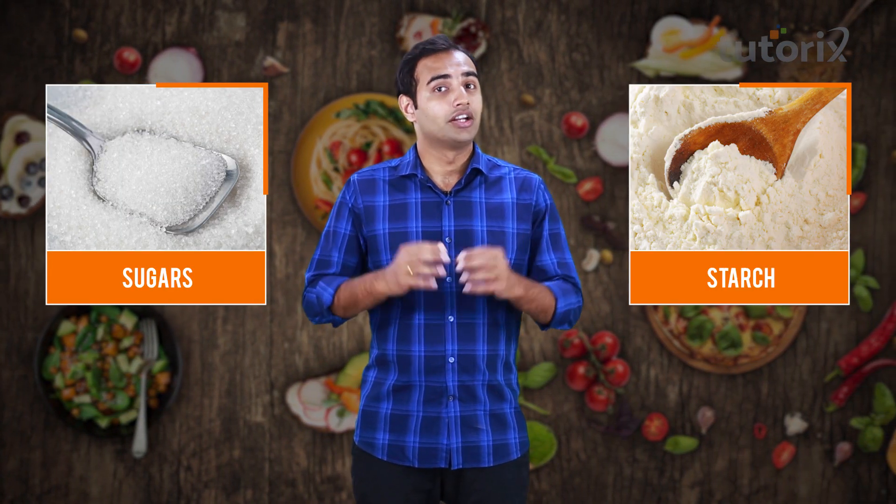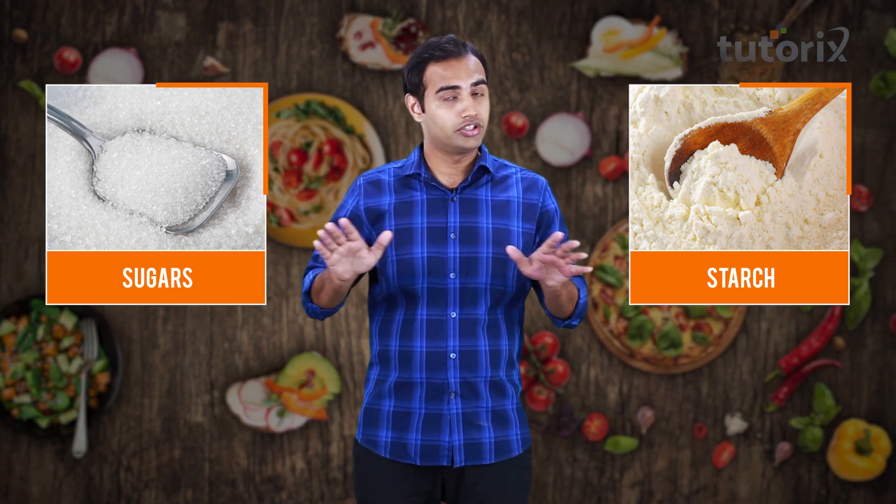Our first test today is to identify the presence of carbohydrates — more specifically the presence of starch in the food that we eat. Carbohydrates are present in two forms: the first is in the form of sugars and the second is in the form of starch. This test is only for the presence of starch and not for sugars, so keep that in mind. For any chemical test we need a chemical reagent, and for this test we'll need an iodine solution.